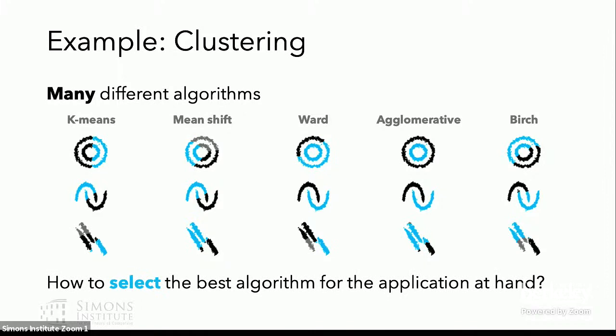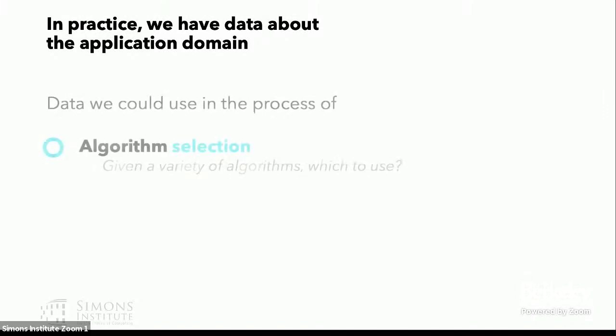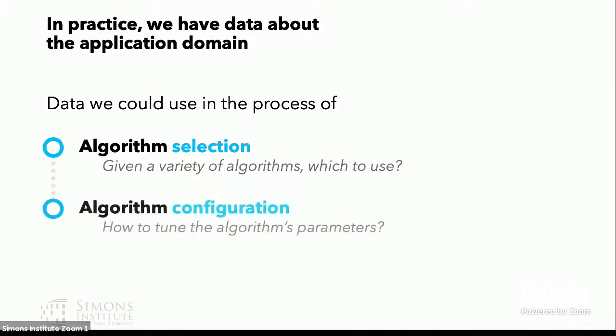So this raises the question, how should I select the best algorithm for my particular application domain? Well, in practice, we often have data about the application domain in which we'll be using these algorithms. Data we could potentially harness for the process of algorithm selection. So given a bunch of different algorithms, which algorithm should I use? Algorithm configuration. So given an algorithm with a ton of tunable parameters, how should I tune that algorithm's parameters? And even more broadly in the context of algorithm design.